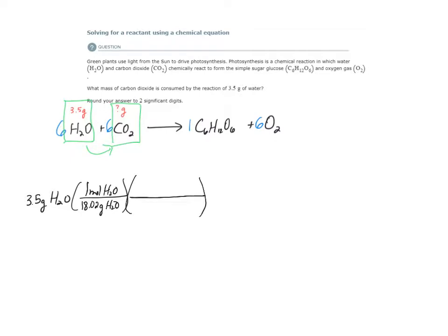So from the balanced equation, I can pull these coefficients. 6 moles of water react with 6 moles of CO2. Now I'm not done because if I check my units, I have moles of CO2 right now. We want a mass of carbon dioxide. So let's place one more conversion factor.